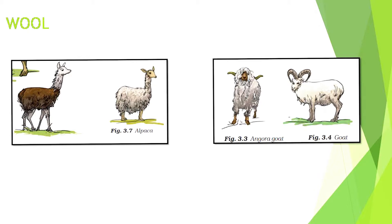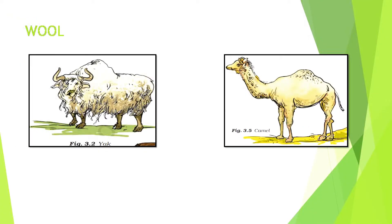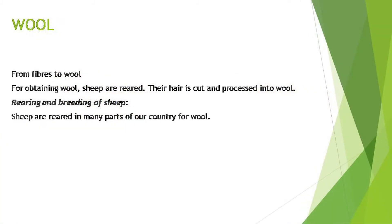Now look at your screen. In this slide I will show the different types of animals that yield wool. In the first figure we see llama and alpaca, found in South America. The second is the Angora goat, found in hilly areas like Jammu and Kashmir. Third is the yak, common in Tibet and Ladakh. The last one is the camel, whose hair is also used as wool.